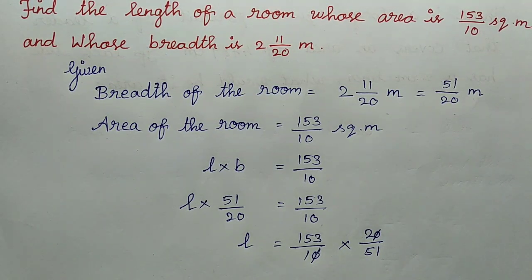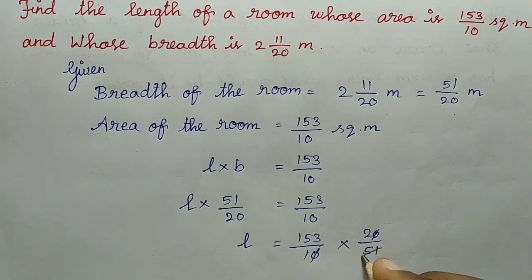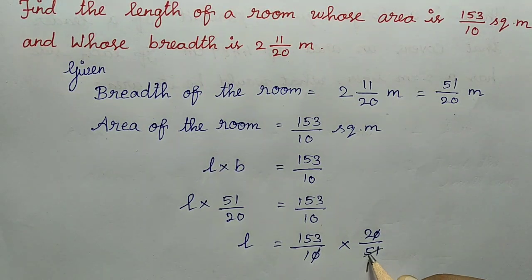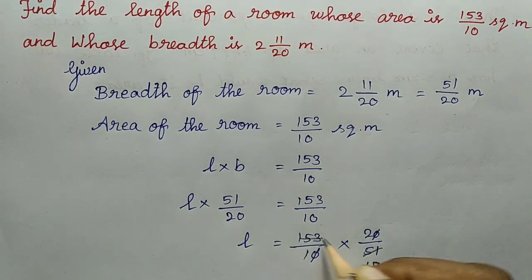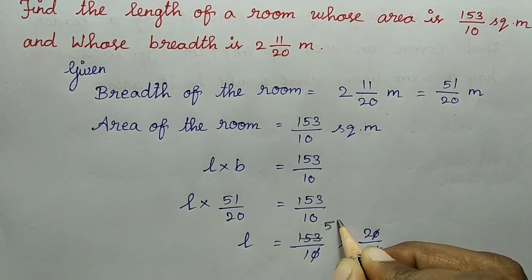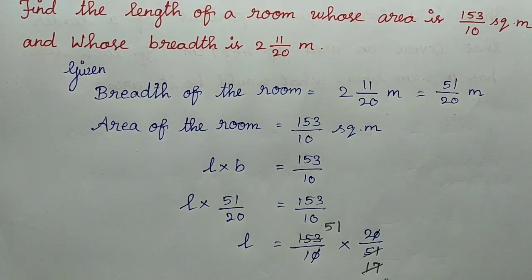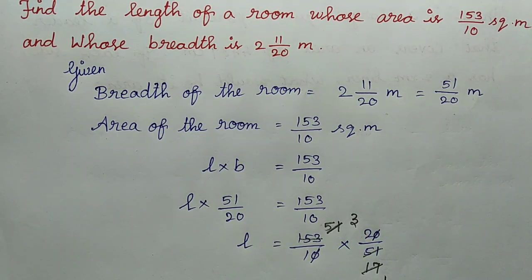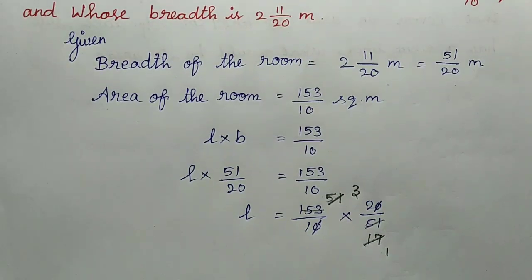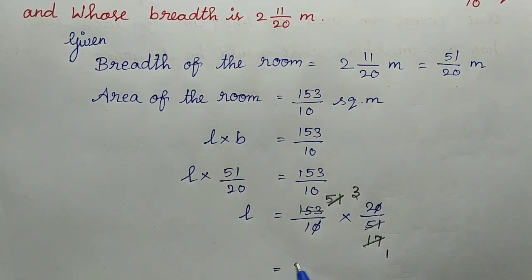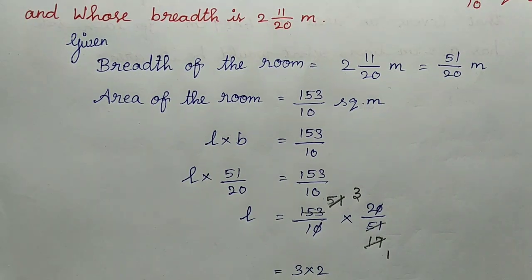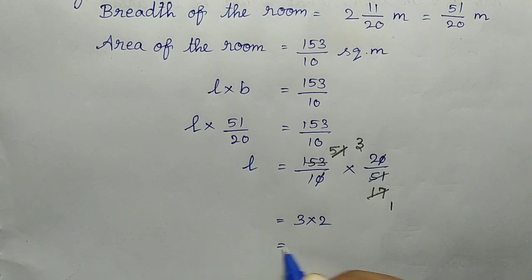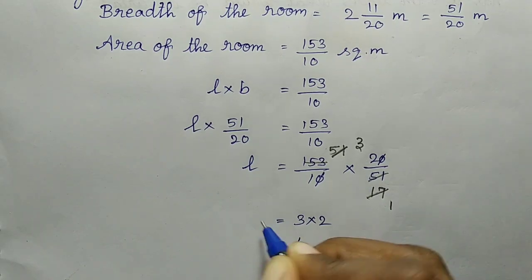We divide using the three times table. 1 times 3 is 3, 2 times 7 times 3 is 21, 5 times 3 is 15, 1 times 3 is 3. For 51, 3 goes into 51 seventeen times. After cancellation, the remaining values are 3 and 2, and 3 multiplied by 2 equals 6.